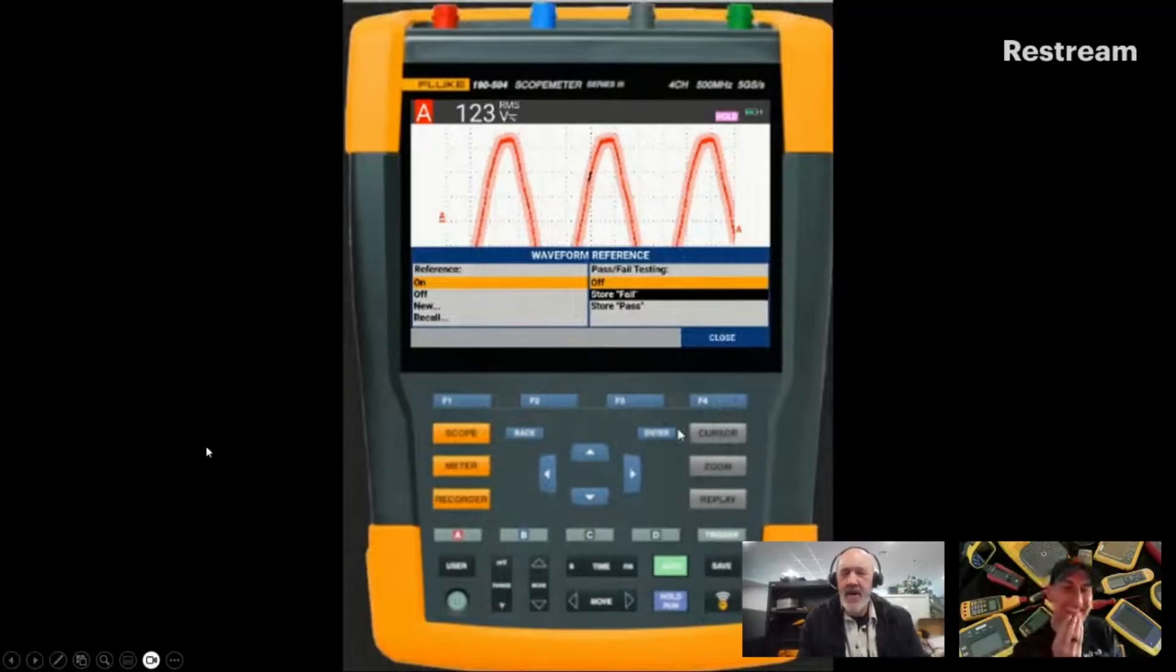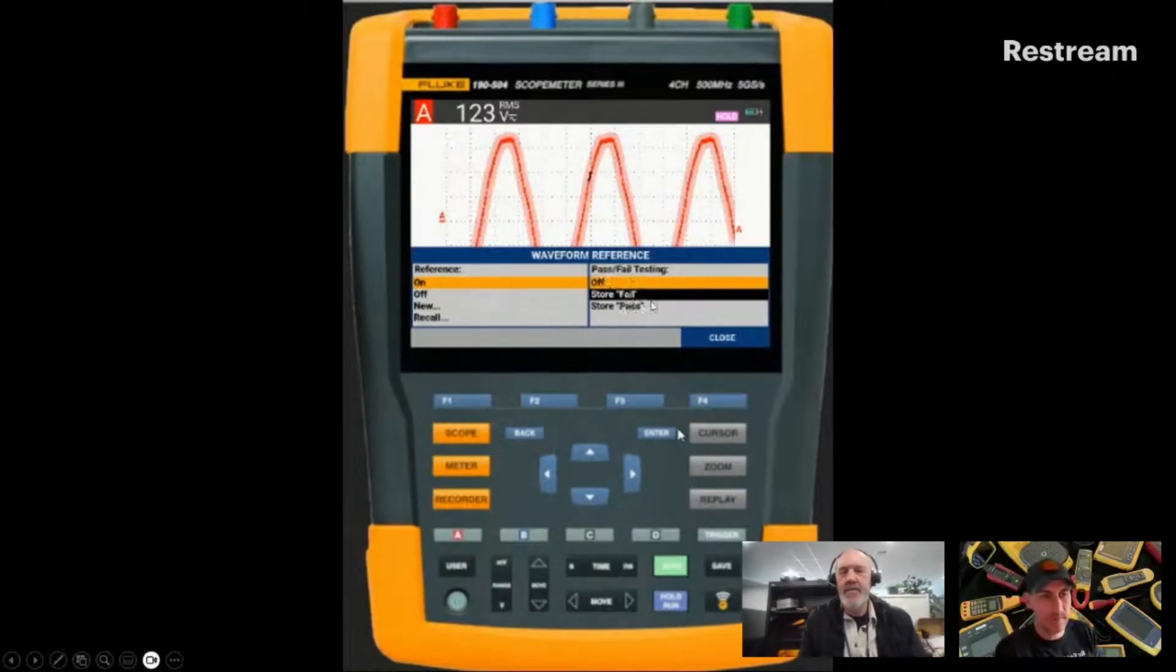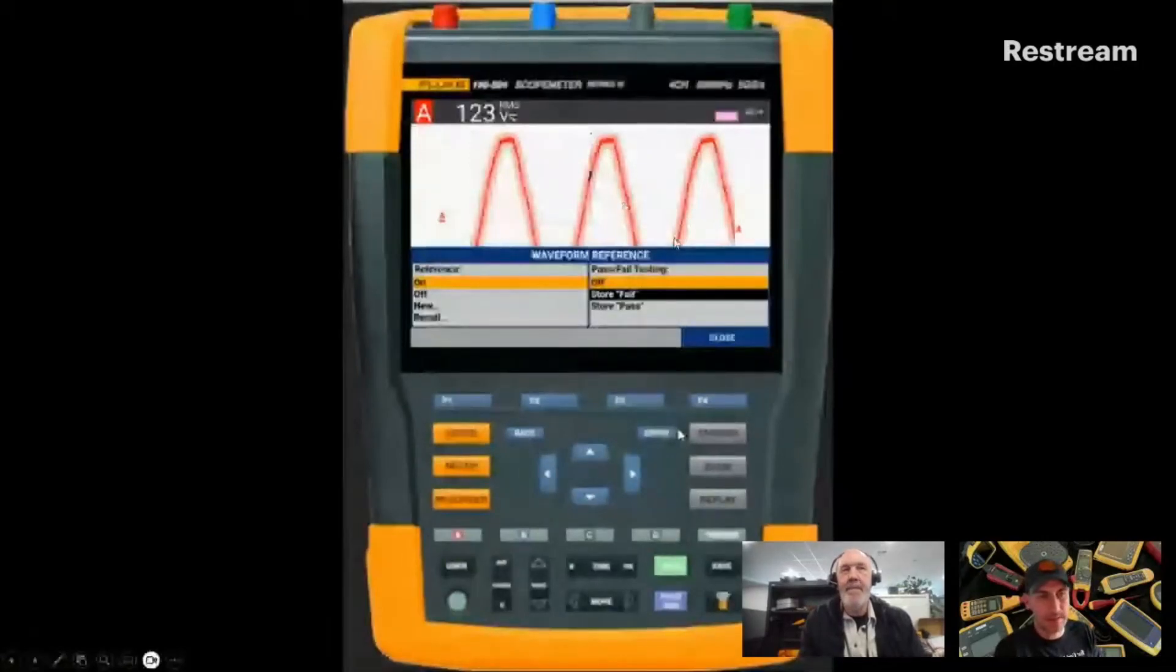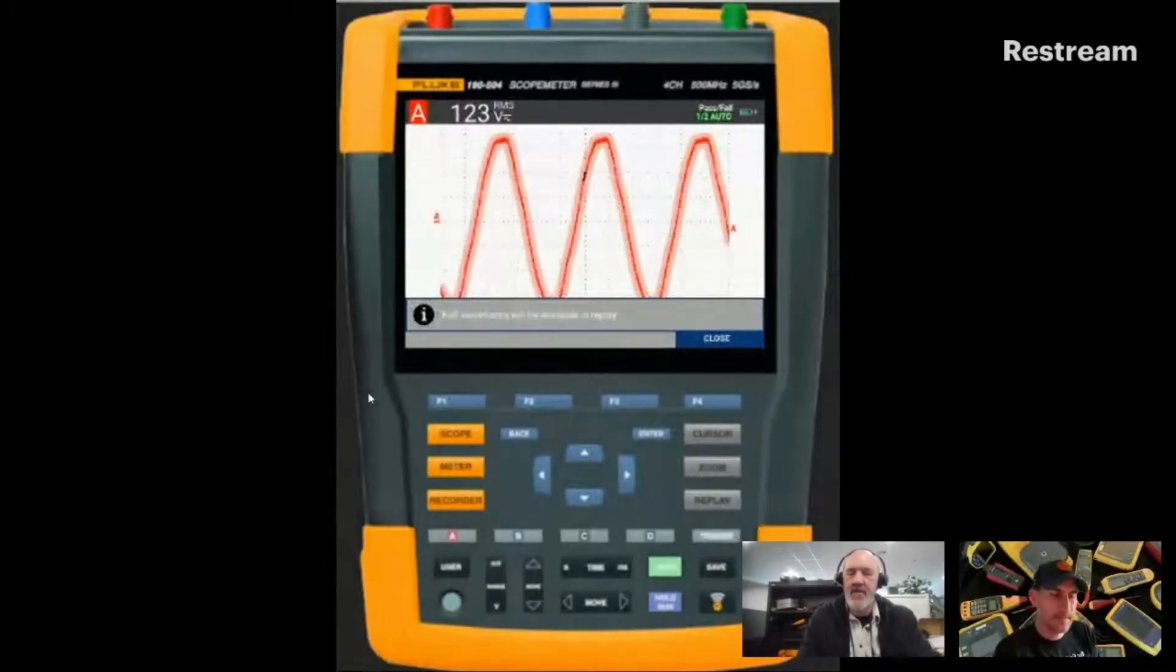And then here we're going to tell the scope meter that we want to use the pass/fail function. This is where since we created the envelope, we can either say pass/fail or pass. We can store the failed options, store the pass options, or turn it off. We're going to store the failed option, so anything outside of that envelope. If you wanted to store the things that are inside, then you can do that. You push enter when you're highlighting it. Then it talks about you can look at these failed situations in the replay, which we'll get to in a few minutes.